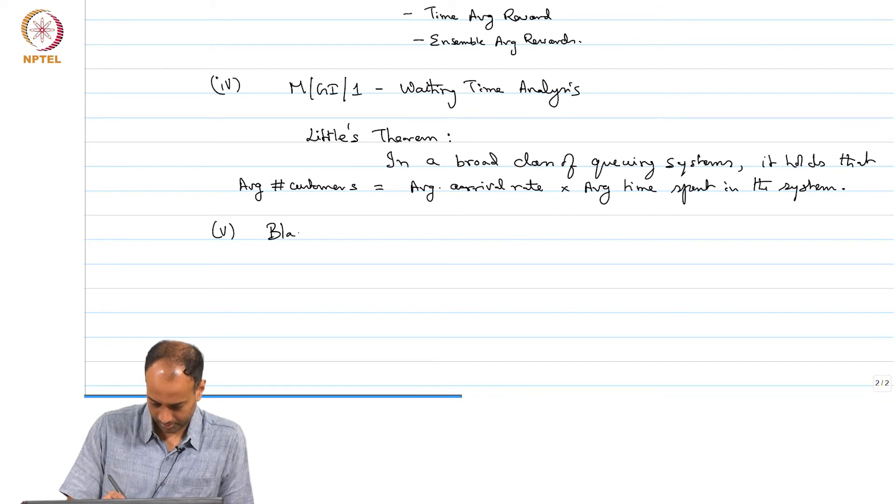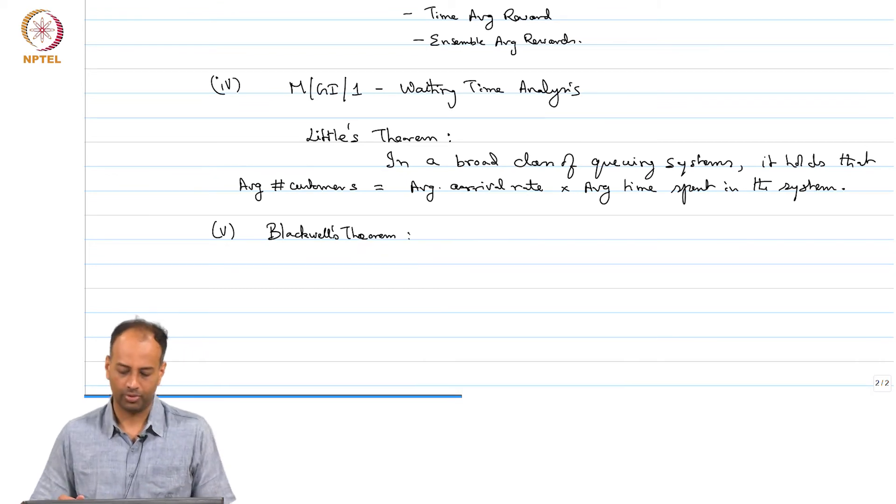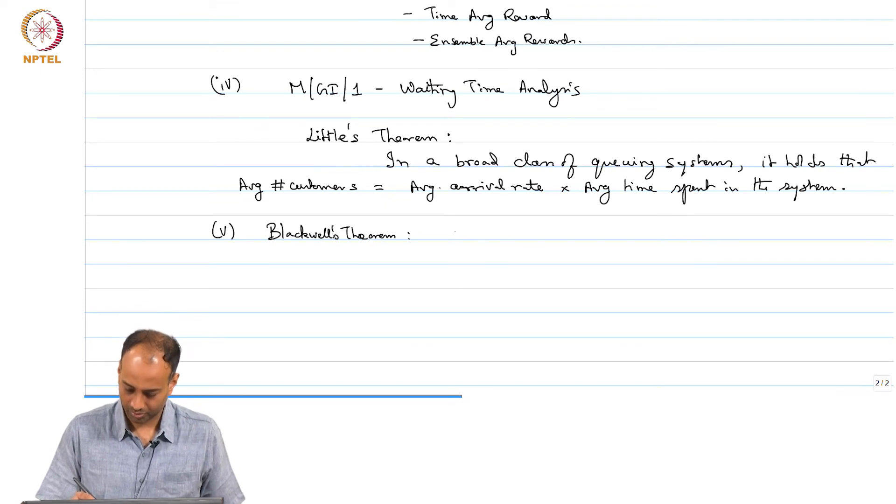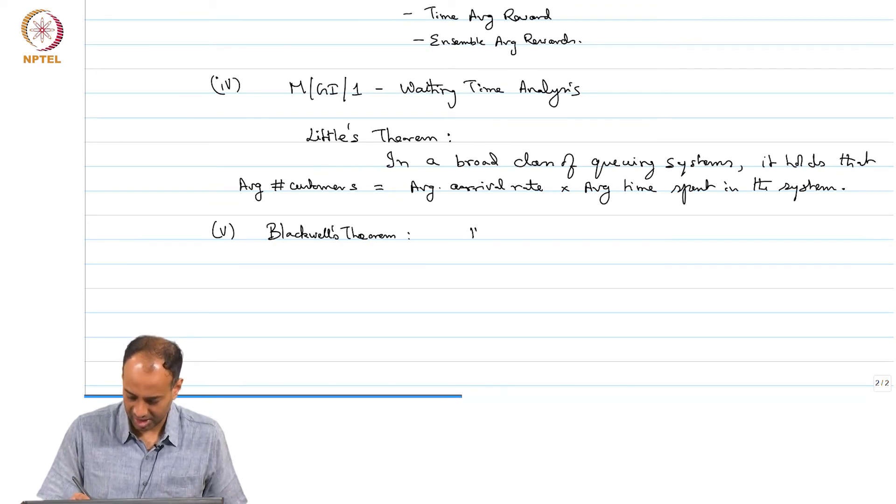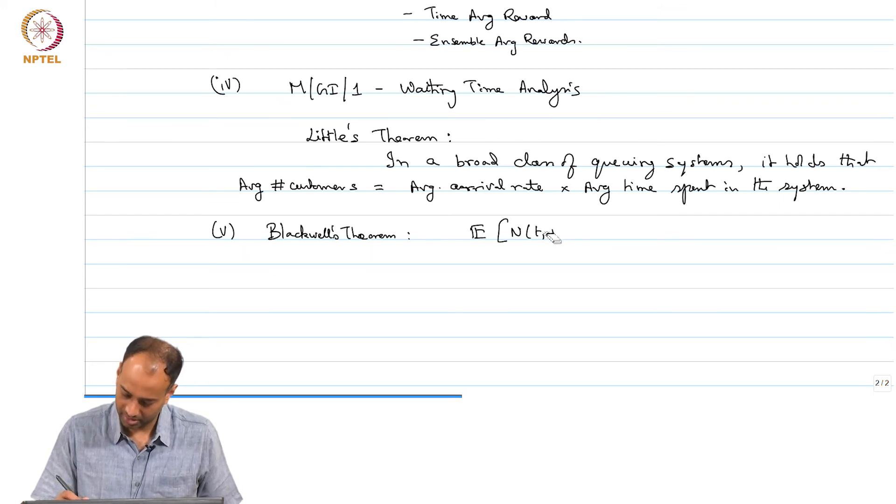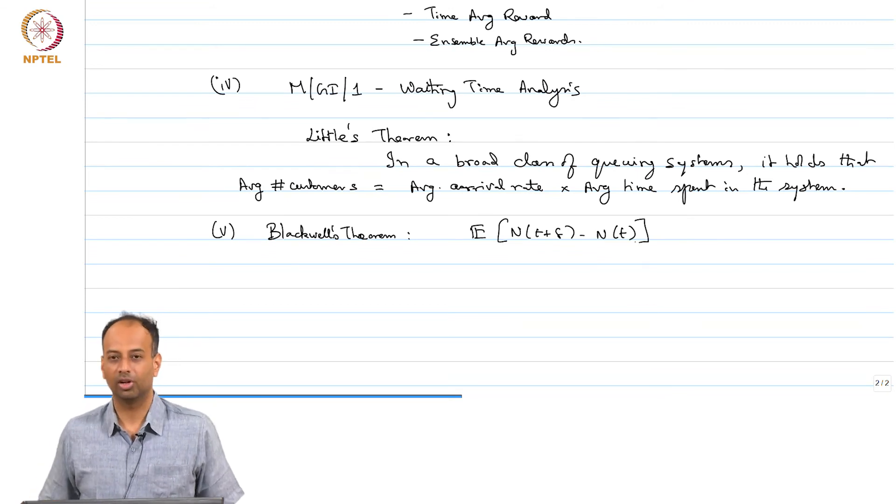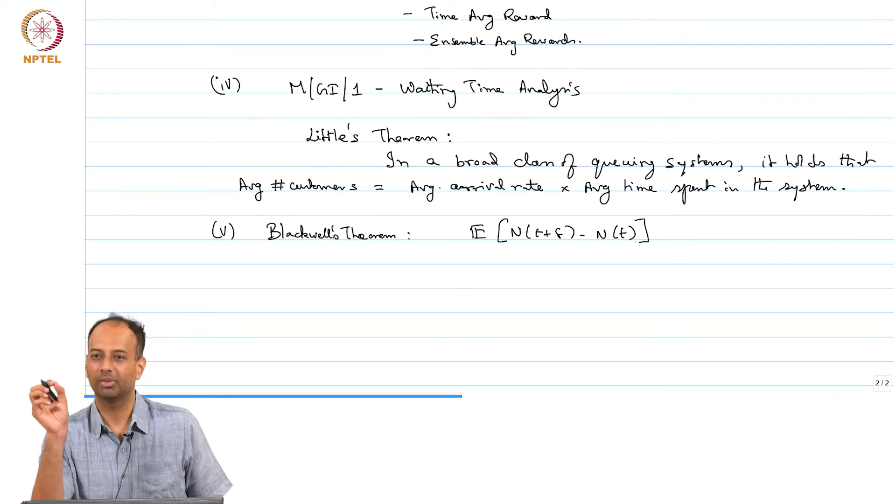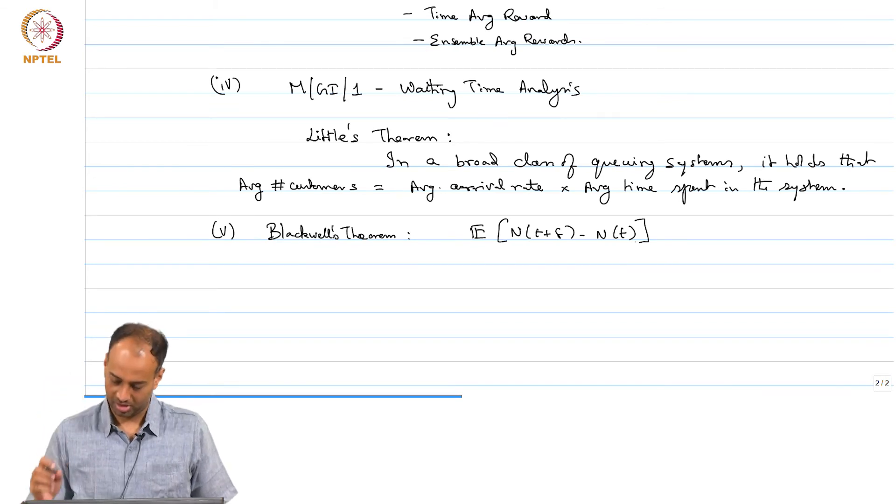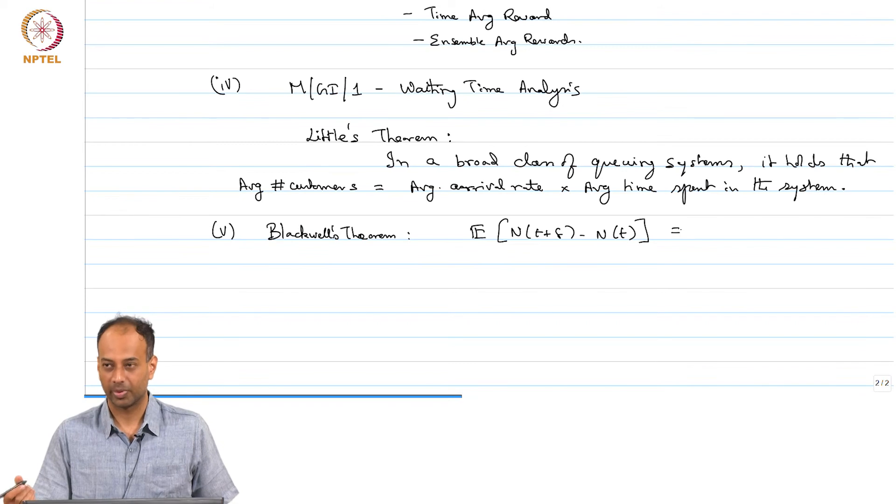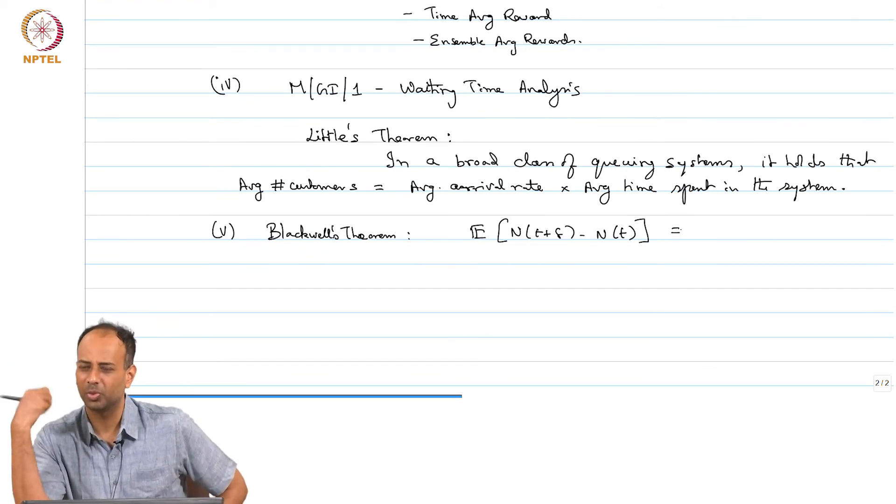Finally, we will do Blackwell's theorem, most likely without proof. It looks at what is the expected number of renewals in a small interval. If you look at N of t plus delta, you look at the expected number of arrivals in t, t plus delta in a renewal process. What is this equal to is the question. For the Poisson process, what is this equal to?